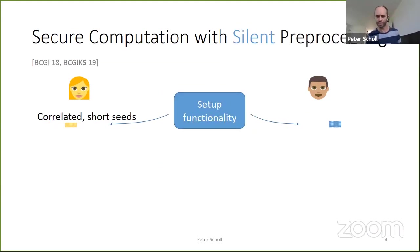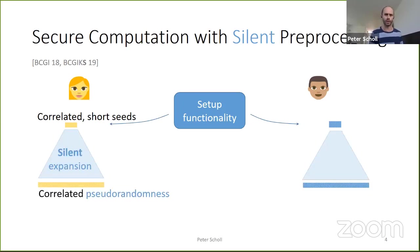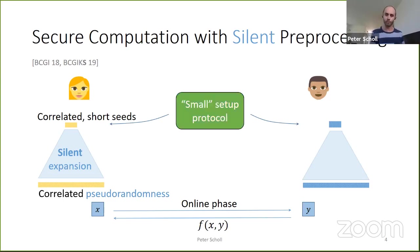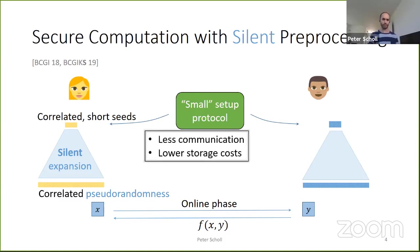In the model of secure computation with silent preprocessing, we tweak this paradigm so the trusted dealer gives the parties a pair of short correlated seeds. These seeds can then be locally expanded to produce a larger amount of correlated pseudo-randomness, usable in the online phase of the MPC protocol. We replace the trusted dealer with a small setup protocol, but this time only producing short seeds instead of large correlated randomness — much more efficient. Additionally, parties only need to store the small seed, allowing them to be more dynamic about who they do secure computation with.